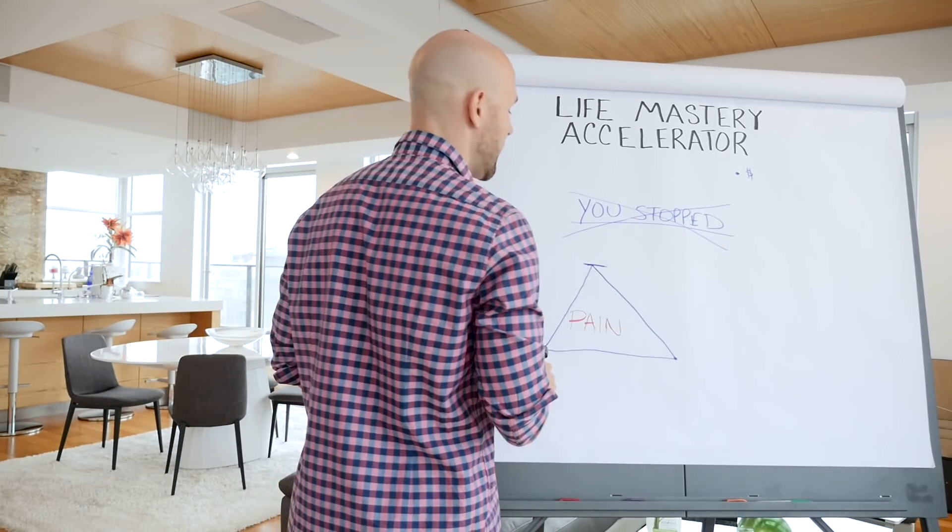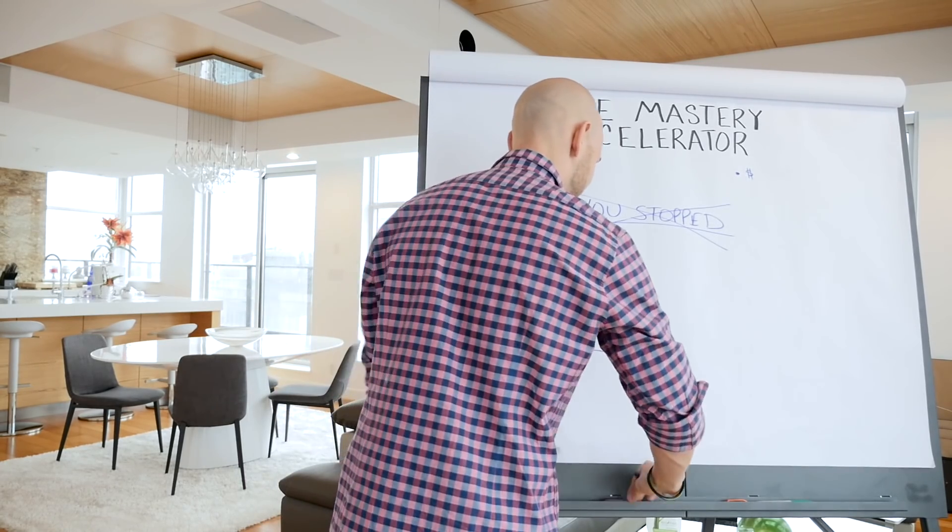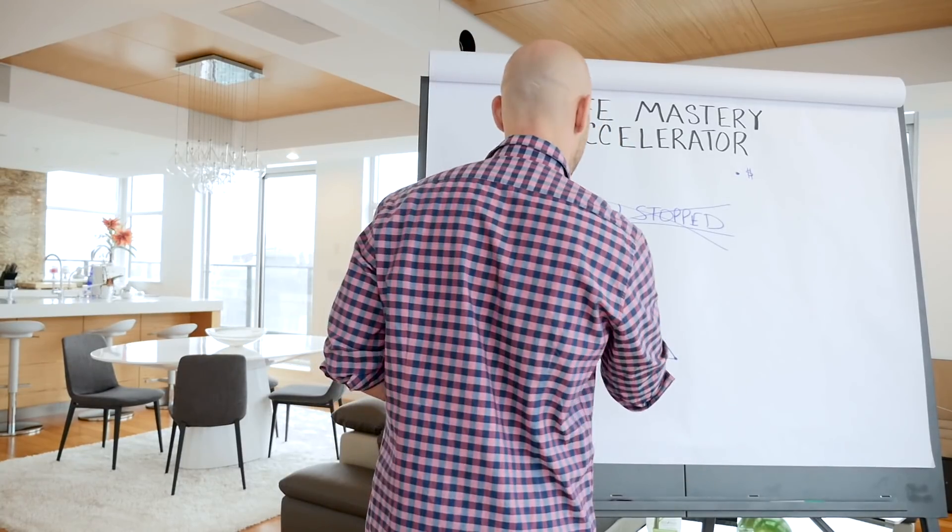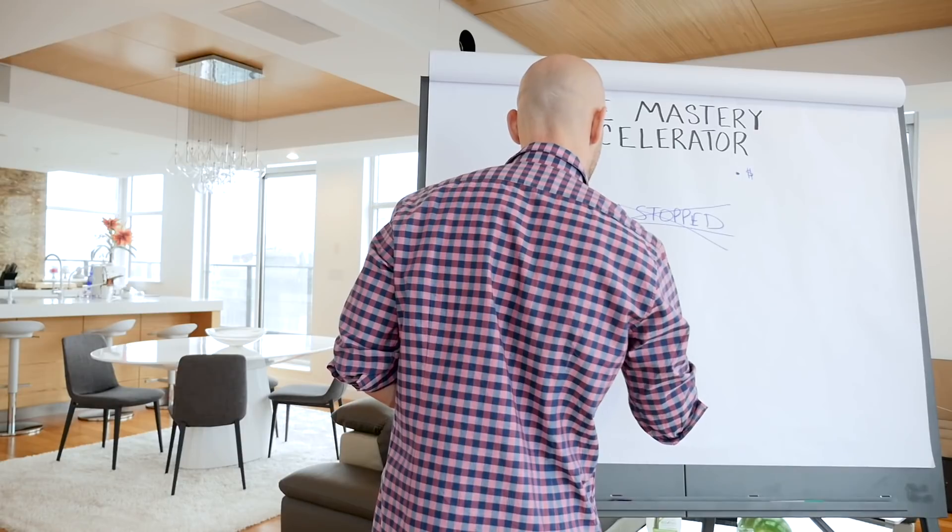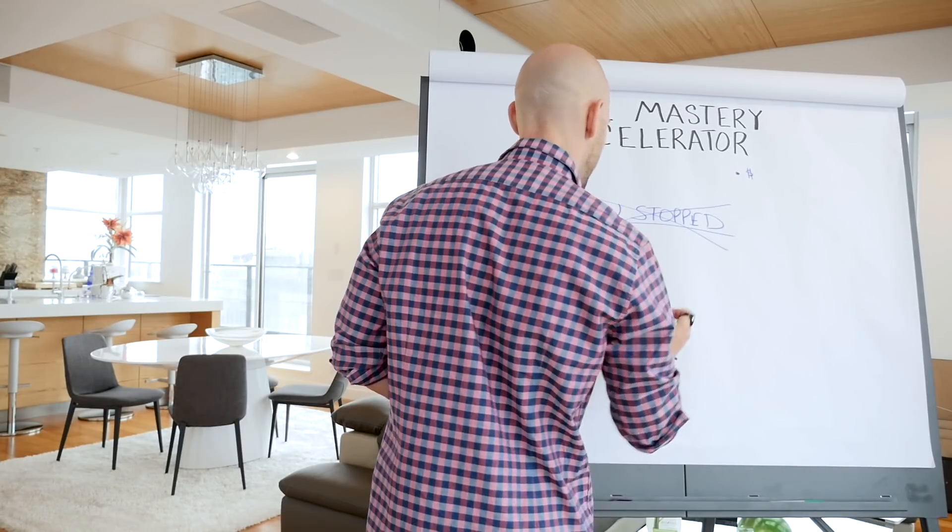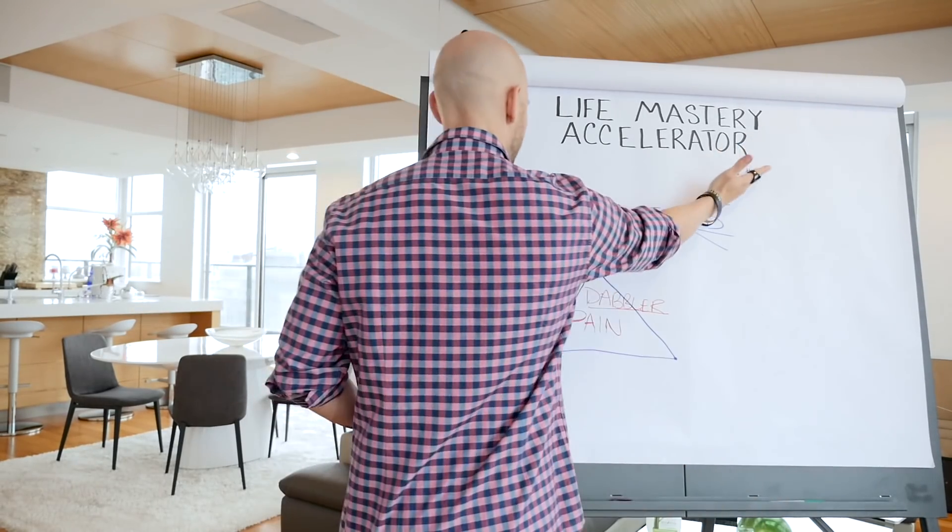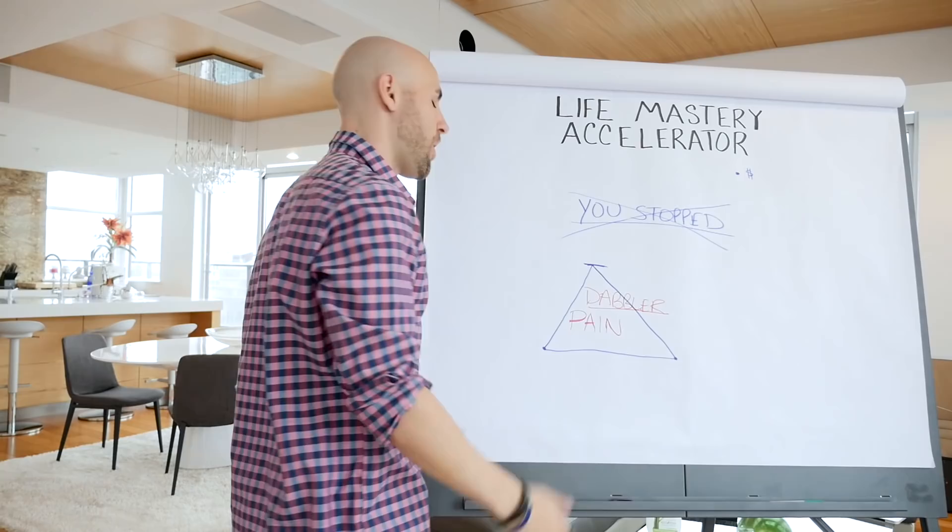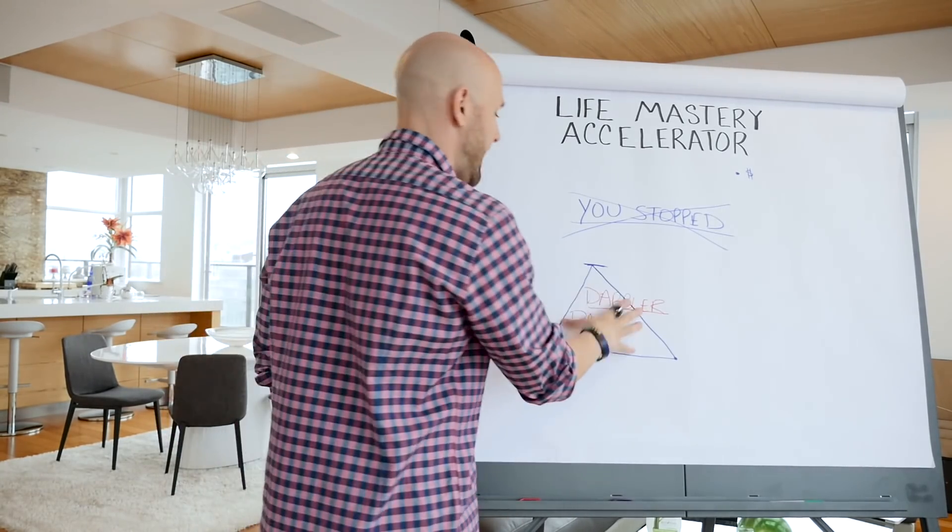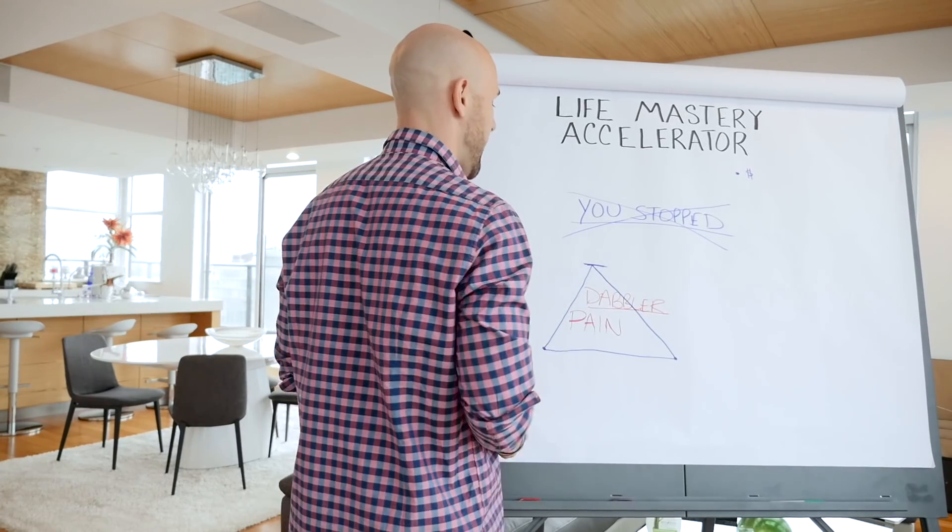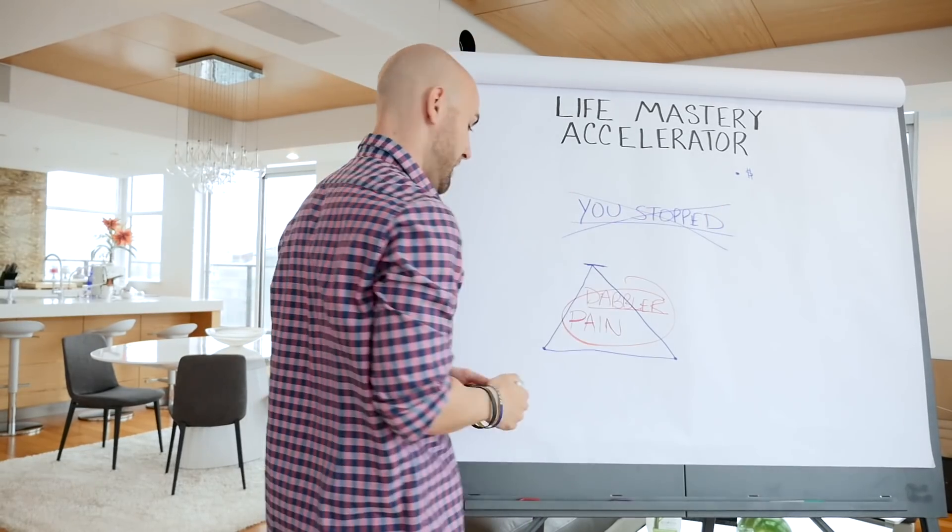You can't get caught up in the dabbler mentality. This right here, I'll use a different color here for this. Use orange. This right here is the dabbler. The dabbler is the person that when they start something, they don't finish it. They get shiny object syndrome. They jump from one thing to the next. They never get to the finish line. They never achieve their goal because they're always playing it safe. They're always staying at the surface. They never go deep. You don't want to be the dabbler. The dabbler equals pain. I want you to really understand this. Again, to get to where you want to go, you got to commit to mastery.